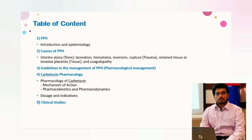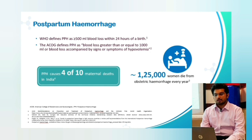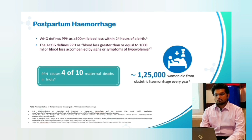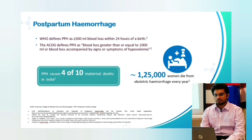What is postpartum hemorrhage? The WHO defines PPH as any blood loss greater than or equal to 500 ml within 24 hours of birth in a normal vaginal delivery, or more than 1000 ml after a cesarean section. The ACOG defines PPH as blood loss greater than or equal to 1000 ml, or blood loss accompanied by signs or symptoms of hypovolemia. PPH causes 4 out of 10 maternal deaths in India, which is a very high proportion.